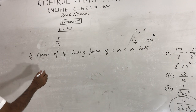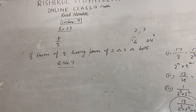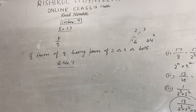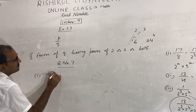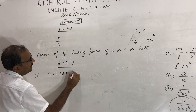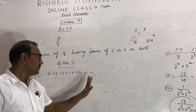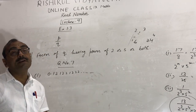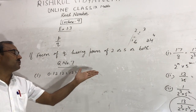Question number 7: write three numbers whose decimal expansions are non-terminating and non-recurring — meaning non-repeating. These are called irrational numbers. For example: 0.121122111222... — this number is non-terminating because the digits go on, and non-repeating because no block of digits repeats. For instance, 12, 1222, 1222... going further.